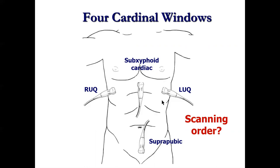Some folks start with the right upper quadrant because that's most likely to give a really positive FAST right away, and they may not have to do any more. Others take the pathology into consideration — if they've been stabbed in the chest, go for the cardiac view first; if they've been run over with big tire tracks over their abdomen, start with the right upper quadrant. Many people just make a diamond of gel so they can slide the probe along the liver edge from the cardiac view and down along the pericolic gutter to the bladder and back up, checking for fluid accumulating in those pericolic gutters.